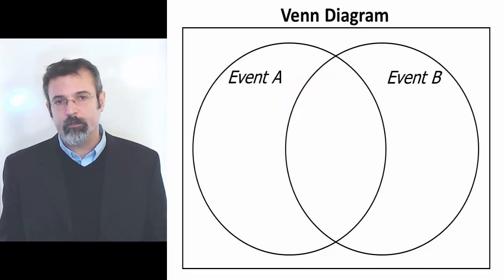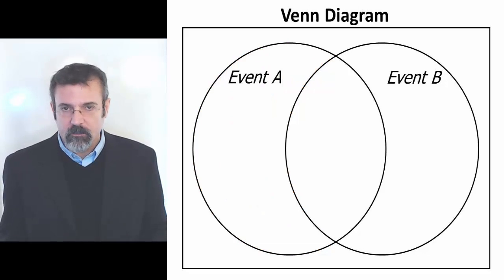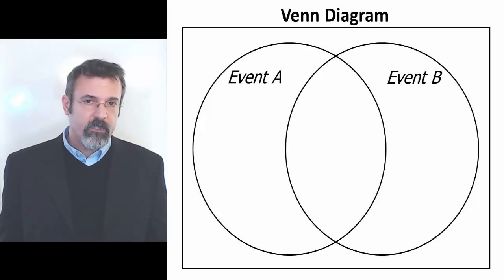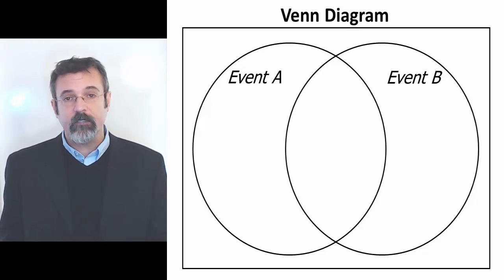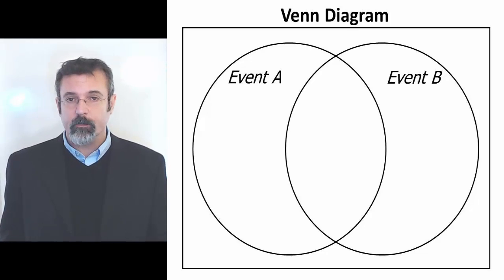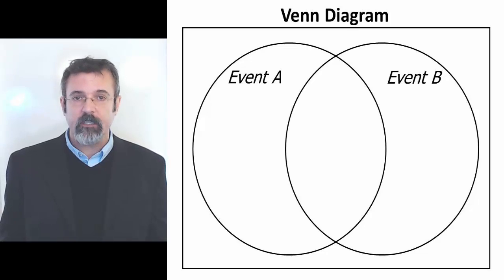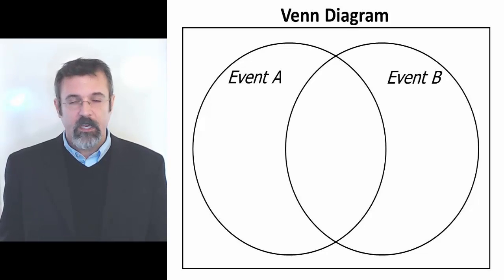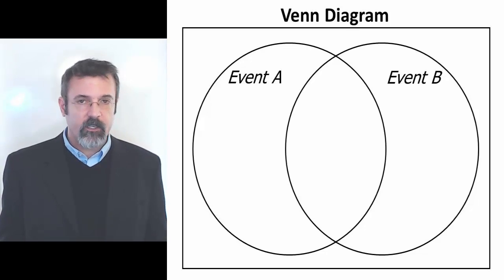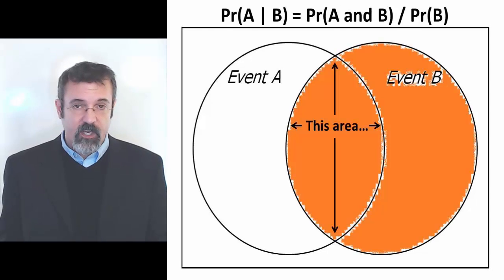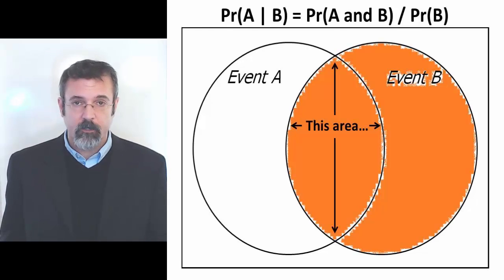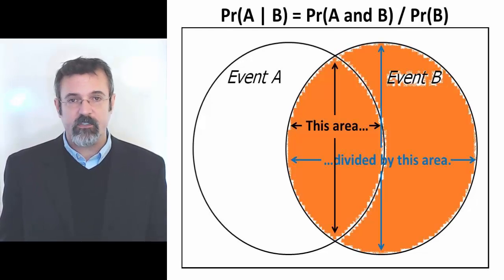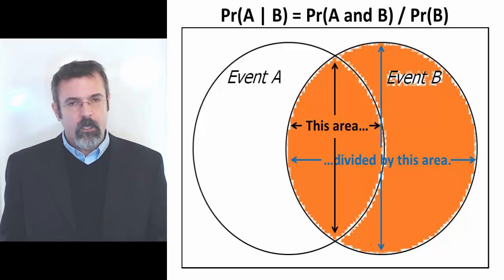A conditional probability is a little more complicated to show in the Venn diagram. The probability of A given B is the probability of A and B divided by the probability of B. In our Venn diagram, that is the area of the center part of the diagram divided by the Event B circle. Let's look at an example.